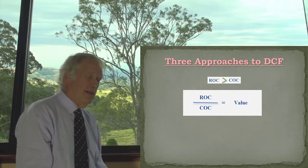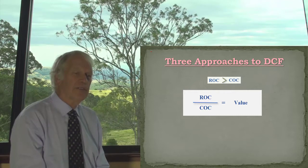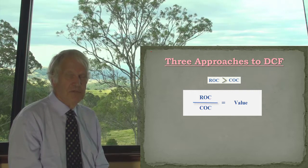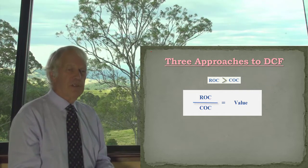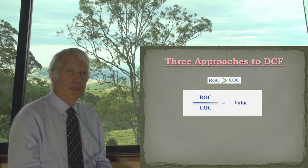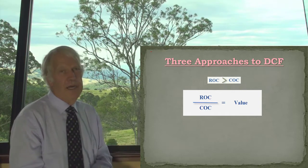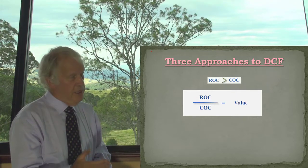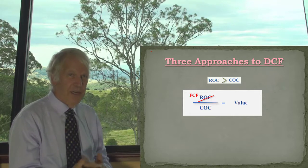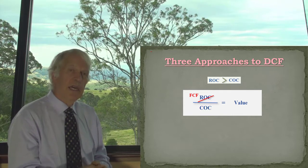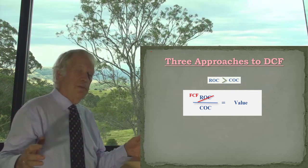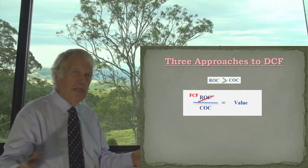As we've said on a couple of occasions, return on capital is effectively the same thing as free cash flow. Free cash flow is a subtractive equation: operating minus investment cash flows. Return on capital is operating divided by investment cash flows. So we cross out return on capital and replace it with free cash flow — they are equivalent. We build a model to the best of our abilities that captures both the investment and the operating cash flows going forward.